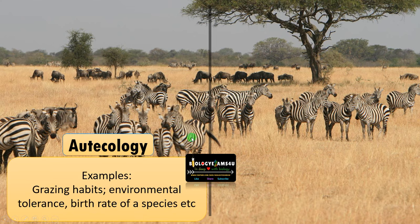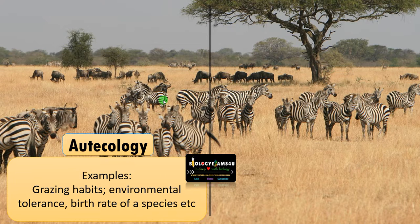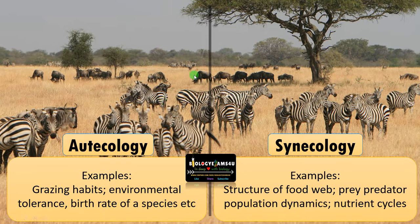Now let us see some examples. Examples of otocology include the grazing habits of a particular zebra population, environmental tolerance to different seasonal changes, and birth rate of a species in different seasons — all are studies of otocology or population ecology. Whereas for synecology, studying the structure of a food web in the African savanna grassland ecosystem is an example of synecology.